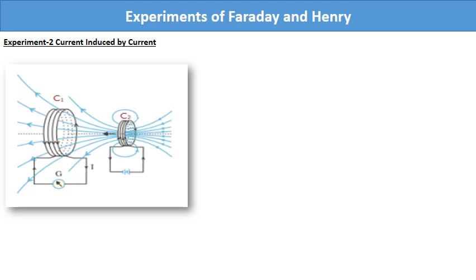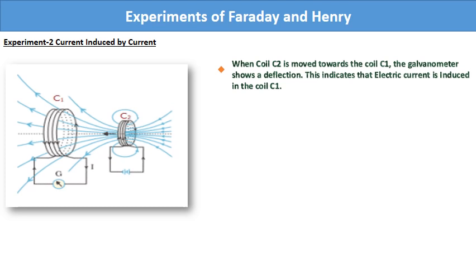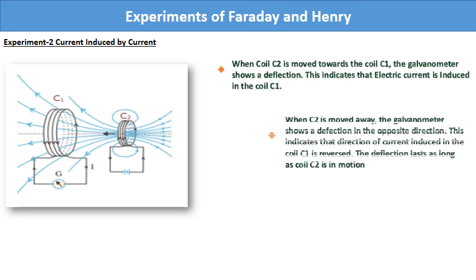Here, the bar magnet is replaced by a second coil C2 connected to a battery. The steady current in the coil C2 produces a steady magnetic field. When coil C2 is moved towards the coil C1, the galvanometer shows a deflection. This indicates that electric current is induced in the coil C1. When C2 is moved away, the galvanometer shows a deflection in the opposite direction. This indicates that direction of current induced in the coil C1 is reversed. The deflection lasts as long as coil C2 is in motion.